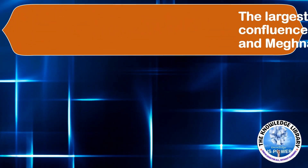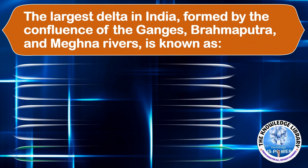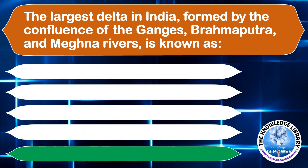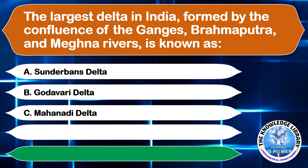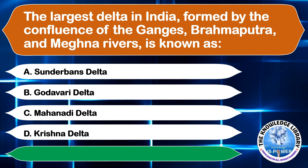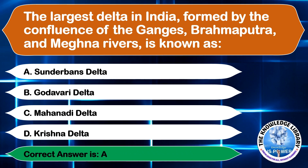The largest delta in India, formed by the confluence of the Ganges, Brahmaputra, and Meghna rivers, is known as: A. Sundarban Delta, B. Godavari Delta, C. Mahanadi Delta, or D. Krishna Delta. The correct answer is option A, Sundarban Delta.